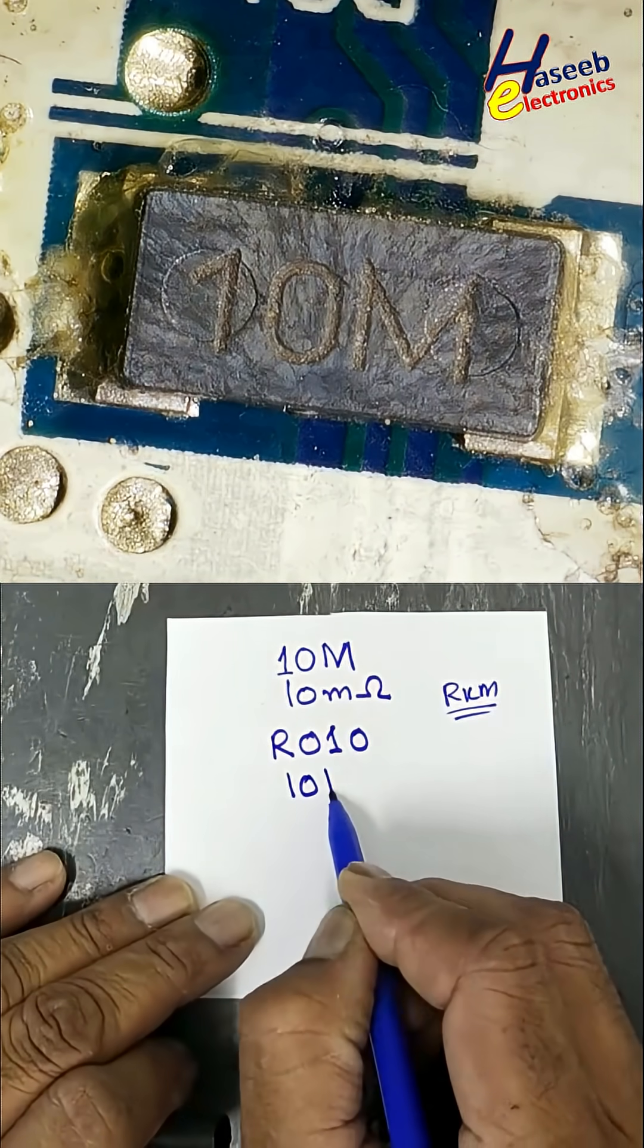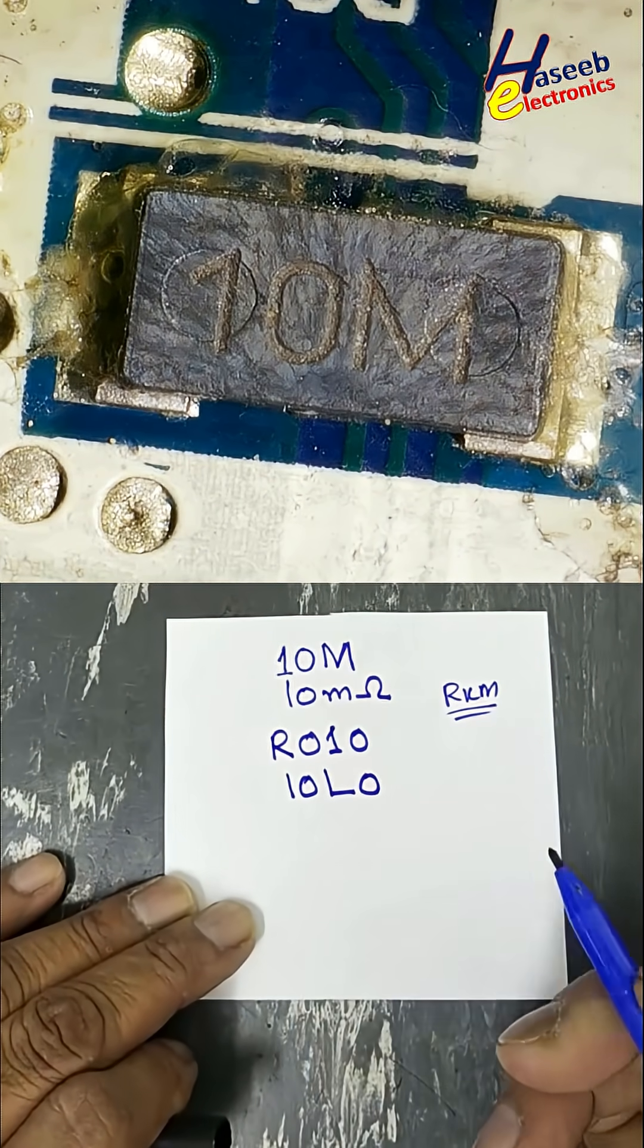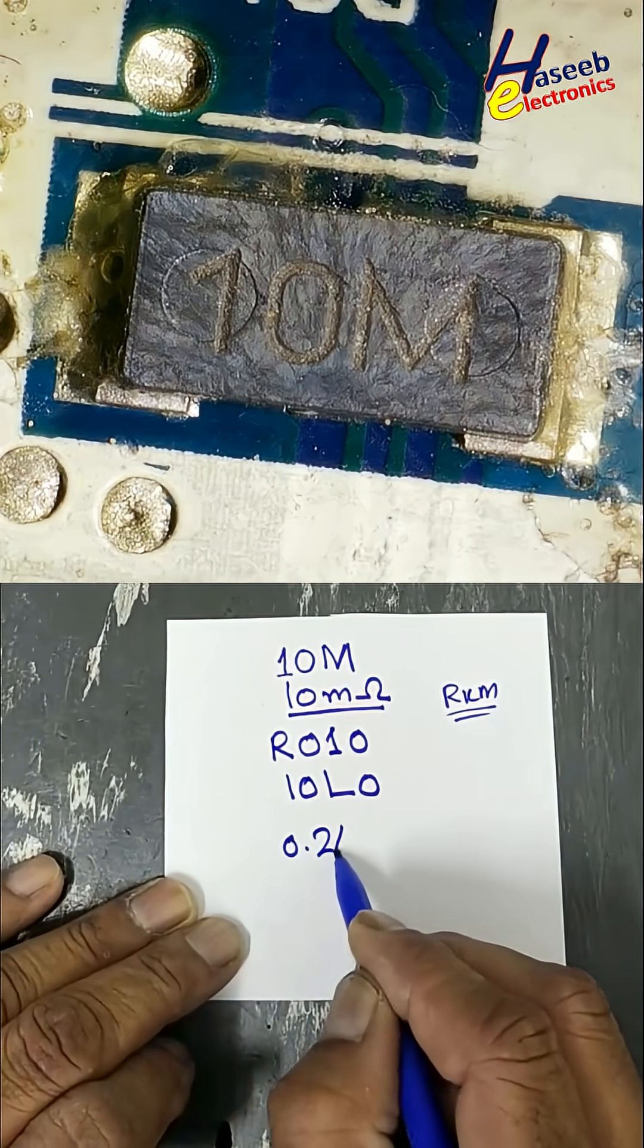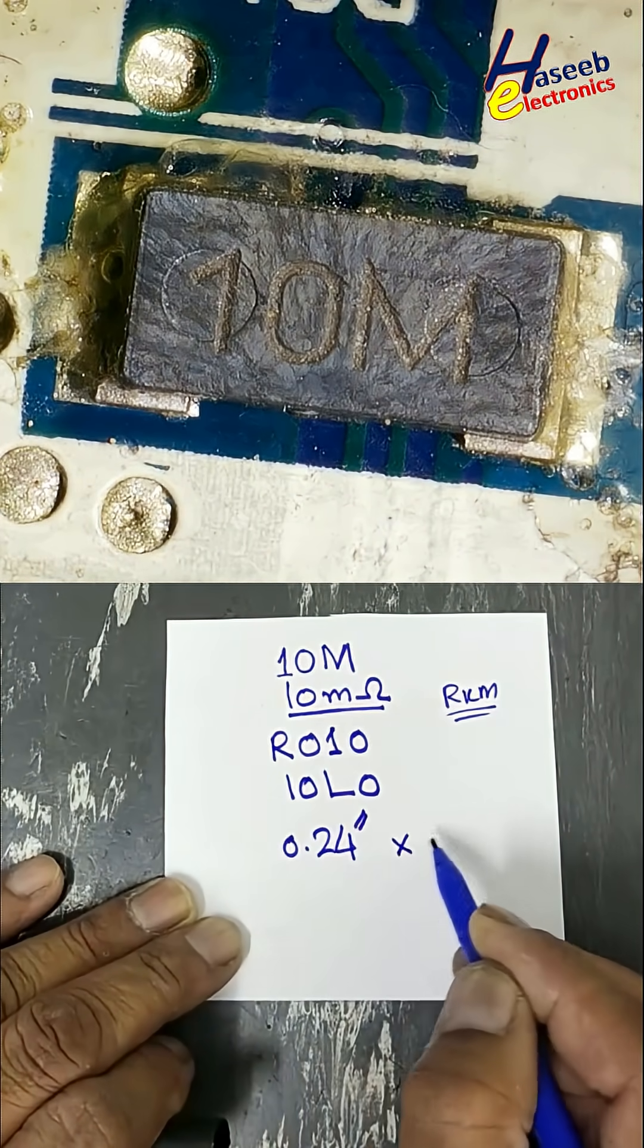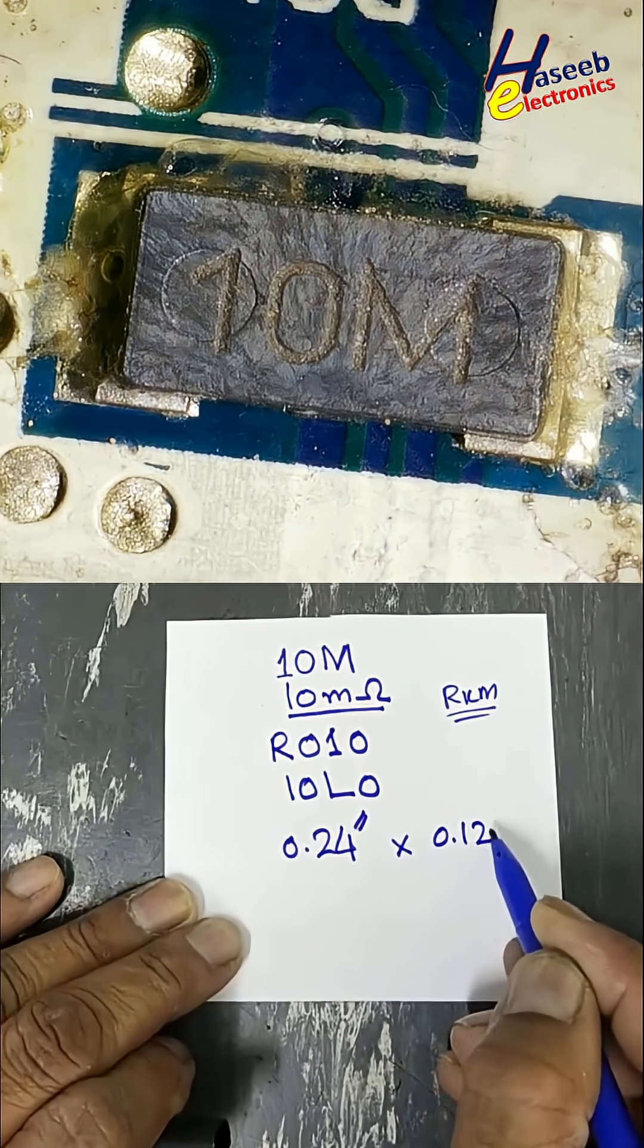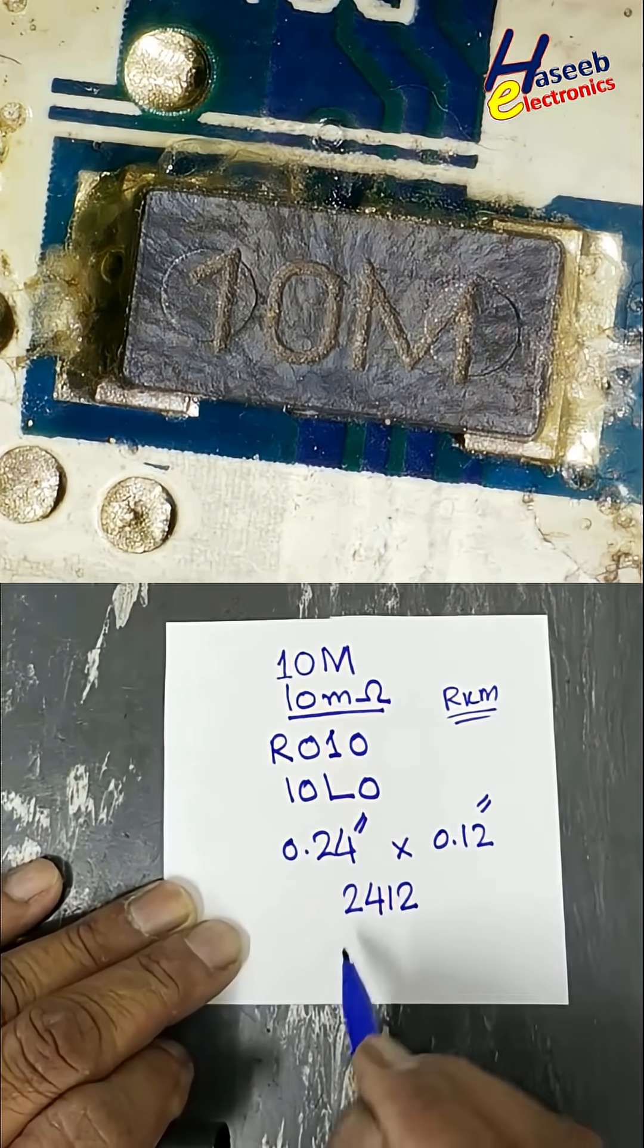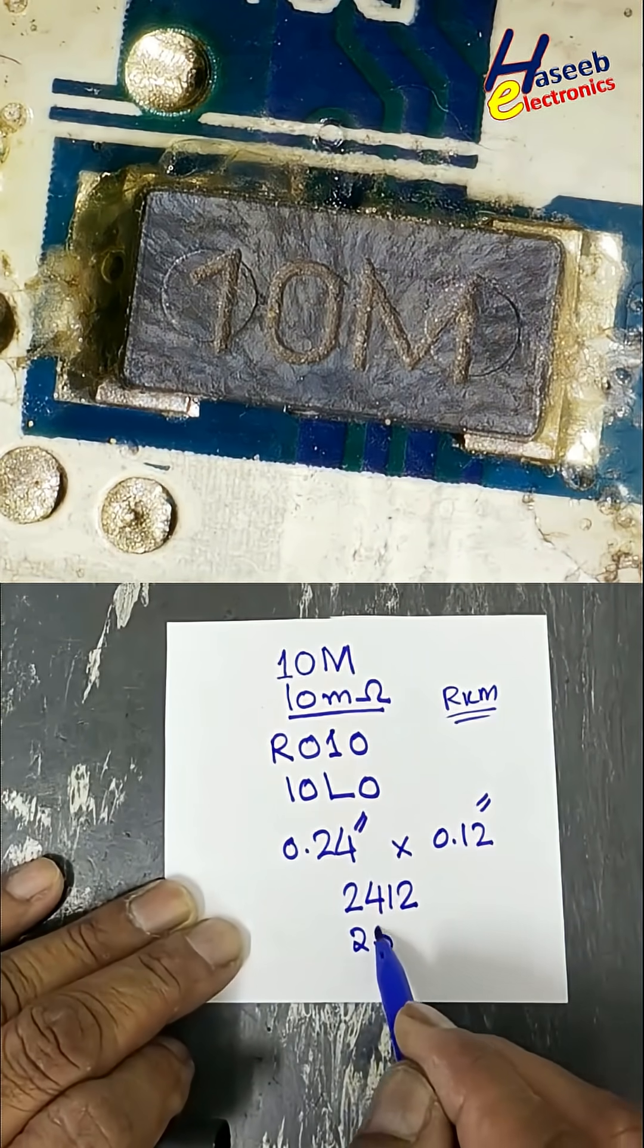If we have 10L0, that is also 10 milli-ohm. Length 0.24 inch, width 0.12 inch - 2412 or 2512 package size.